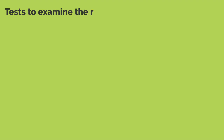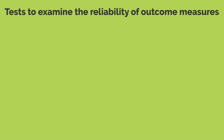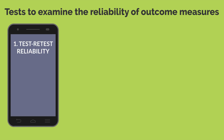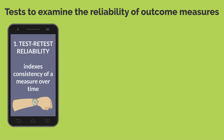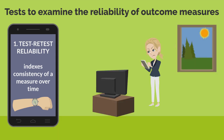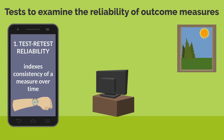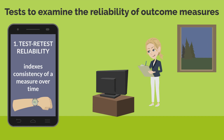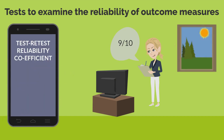There are a number of tests that can be used to examine the reliability of outcome measures. The first examines test-retest reliability, which indexes consistency of a measure over time. This involves measurement being made again and again — for example, someone watching a video interview of a patient with depression and using a scale to rate their depression symptoms, then re-watching the same interview and repeating the rating. Scores in the repeated tests are correlated, producing a test-retest reliability coefficient. A value over positive 0.7 is representative of acceptable reliability.